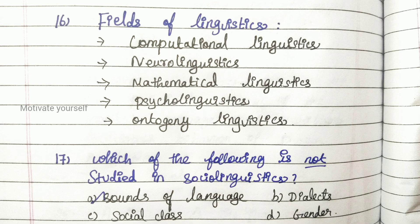Sixteenth question: fields of linguistics — computational linguistics, neurolinguistics, mathematical linguistics, psycholinguistics, and anthropological linguistics. Seventeenth question: which of the following is not studied in sociolinguistics? Option A: sounds of language. Option B: dialects. Option C: social class. Option D: gender. Answer: Option A, sounds of language.